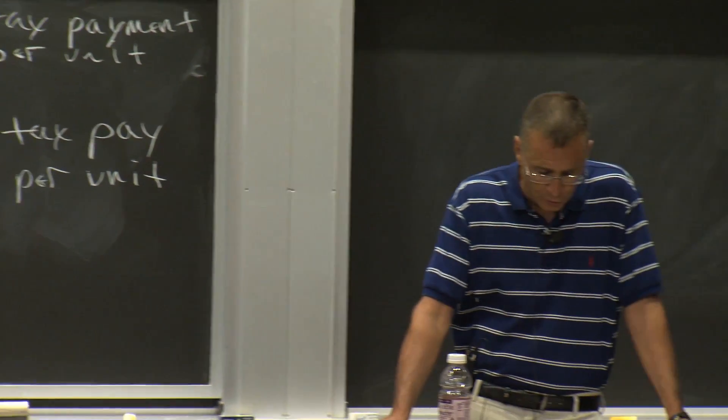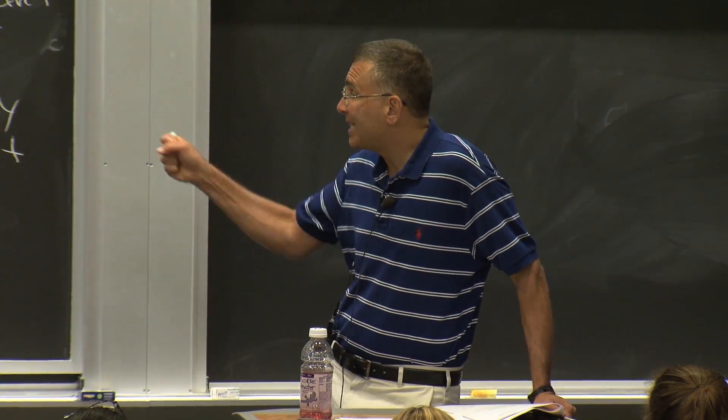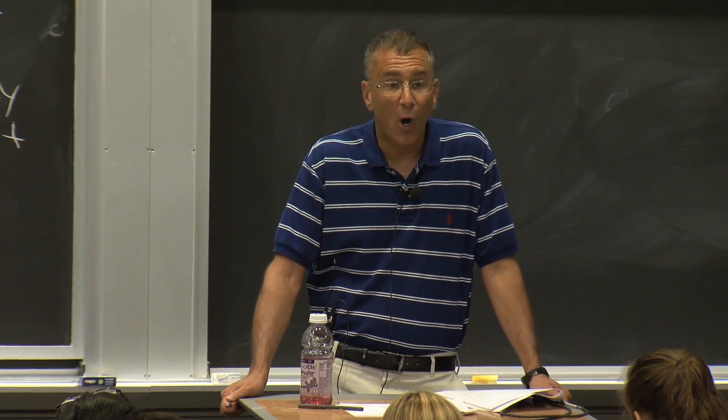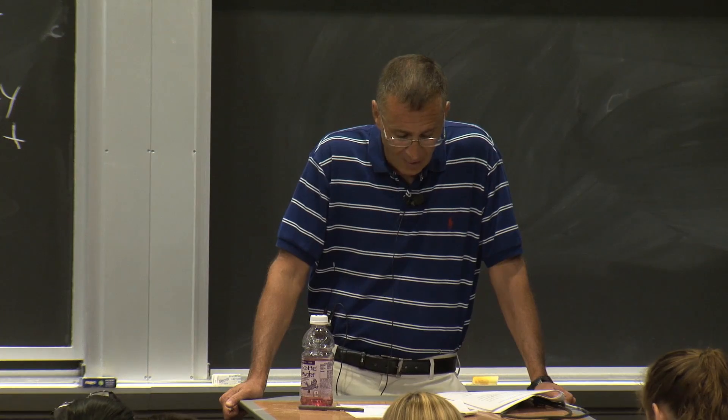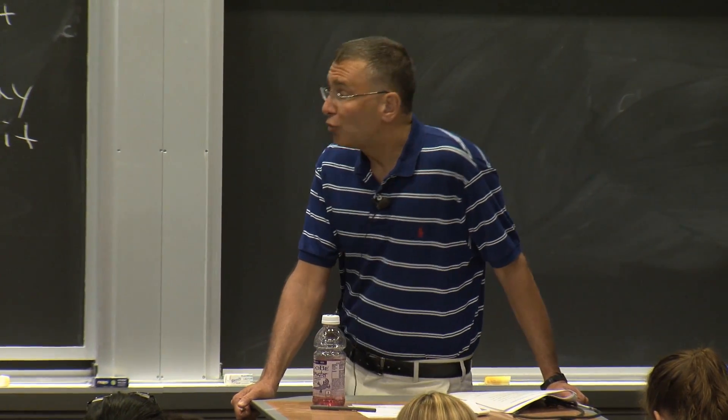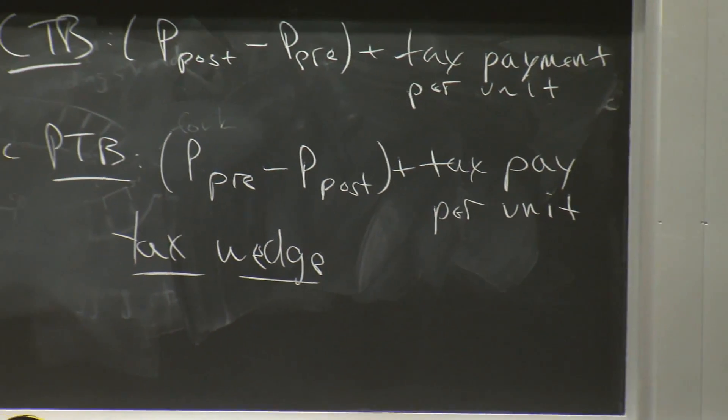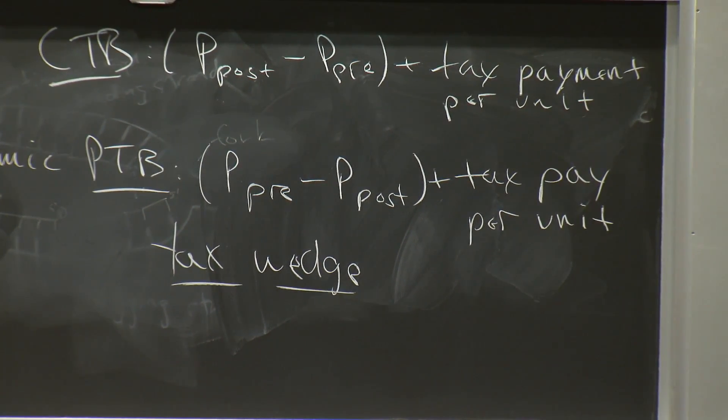What's the burden on producers? Well, their pre-tax price was $1.50. Their post-tax price is $1.30. So they bear a 20-cent burden. They bear a 20-cent burden just like they did before. Nothing has changed.